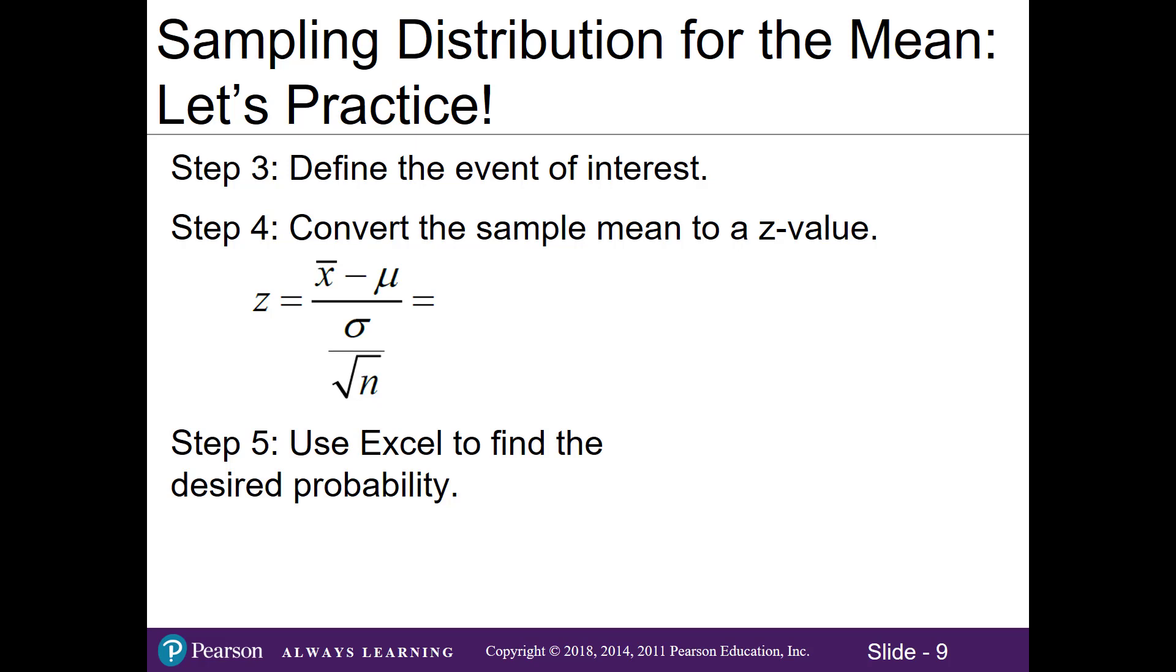In step 3, we define the event of interest. We want to know the probability that our sample mean is greater than 2100. Or in the problem, it said exceeded. Exceeded is the same thing as greater than.